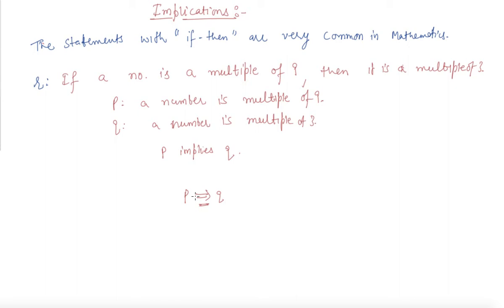P is a sufficient condition of Q, P only if Q, and Q is a necessary condition for P.